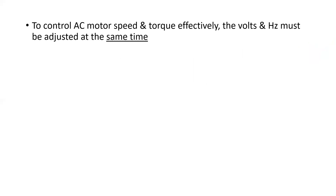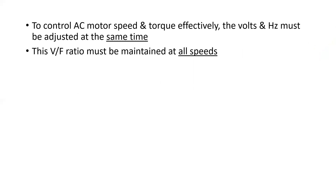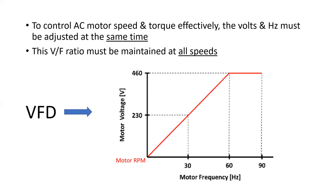To control AC motor speed and torque effectively, the volts and the hertz must be adjusted at the same time. This V/F, or voltage-frequency ratio, must be maintained at all speeds. We see different types of graphs and diagrams that illustrate this relationship — the VFD is adjusting the voltage at exactly the same time that it is adjusting the frequency, giving a very linear line of speed that can be adjusted above or below the motor rating.